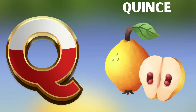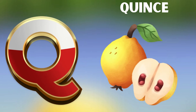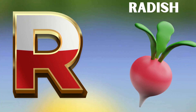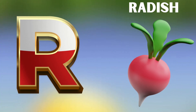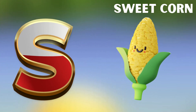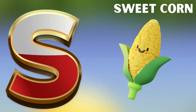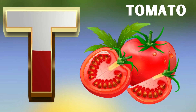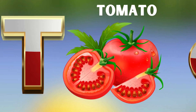Q is for quince — quh, quh — quince. R is for radish — rr, rr — radish. S is for sweet corn — suh, suh — sweet corn. T is for tomato — tuh, tuh — tomato.